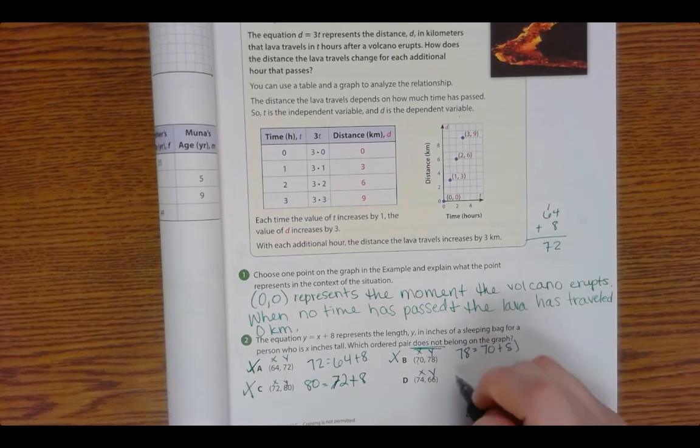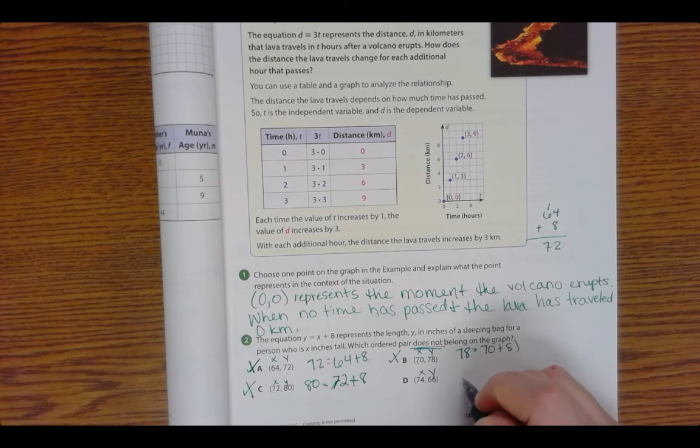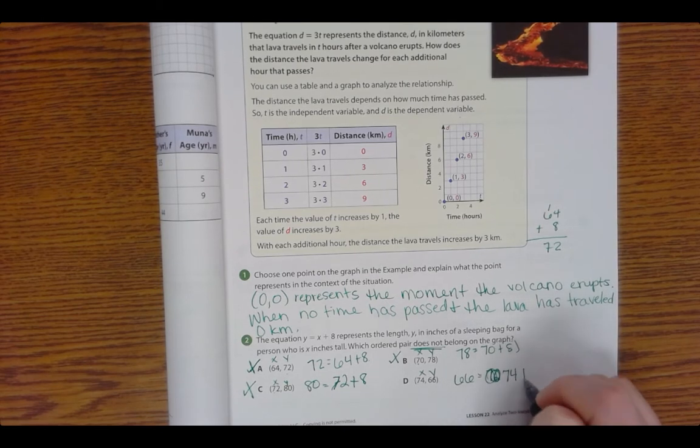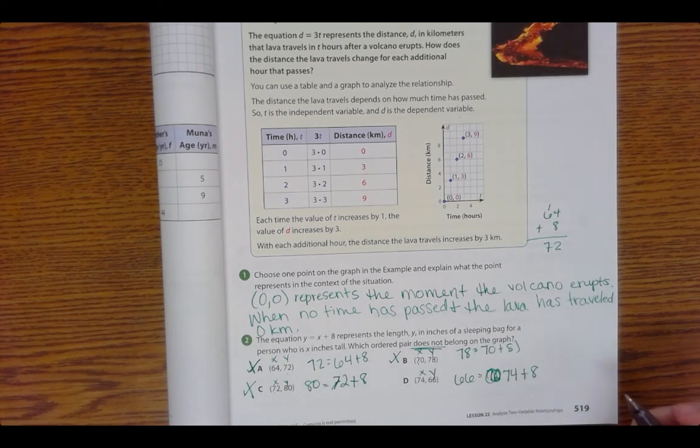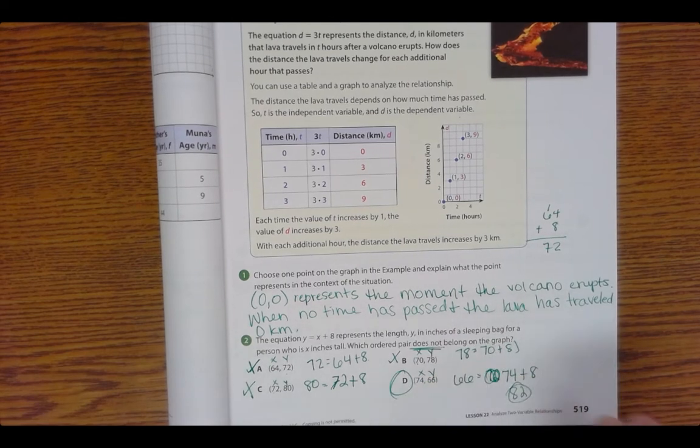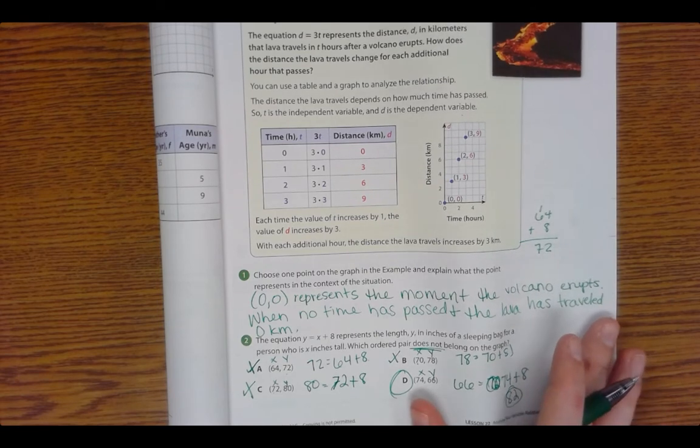D. Let's check and make sure. All right, so y which is 66 equals x plus 8. So x is 74, 74 plus 8. 74 plus 8 gives me 82. So this is our correct answer. That is incorrect. All right, so D is your answer.